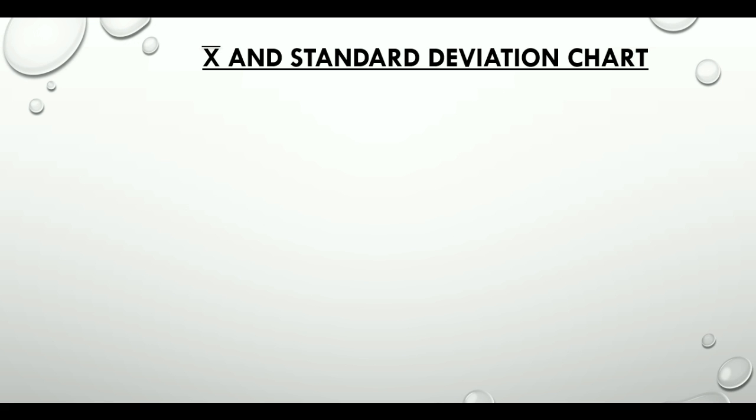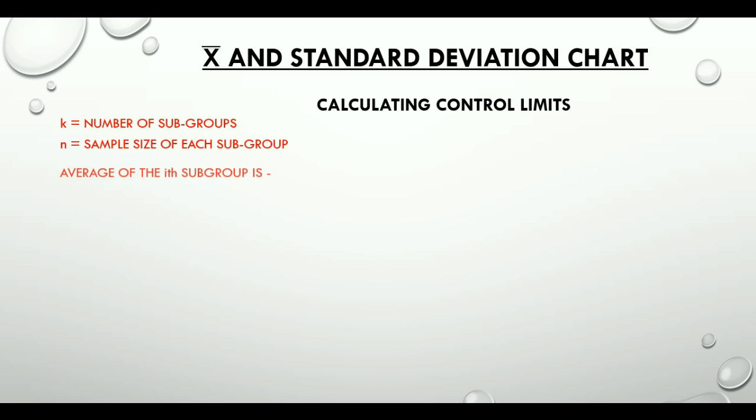Let's understand the control limits for X-bar s chart. What we would require is k, the number of subgroups, and n, the sample size of each subgroup. Average of the ith subgroup, X̄ᵢ, is equal to the summation of Xᵢⱼ divided by n, where j can take values from 1 to n.